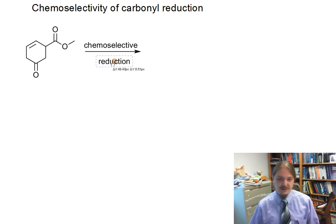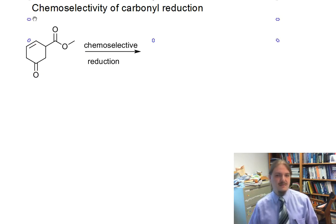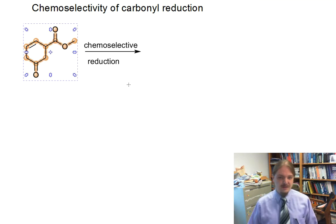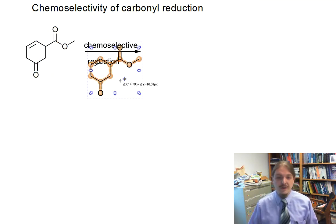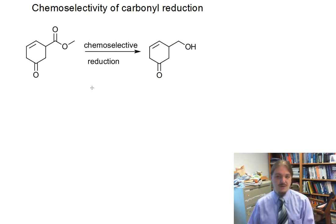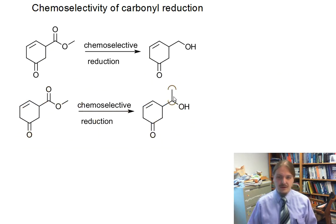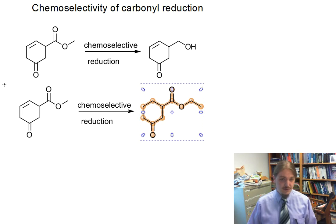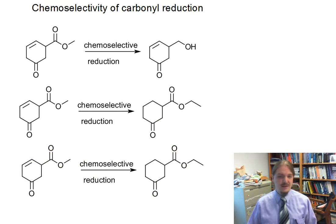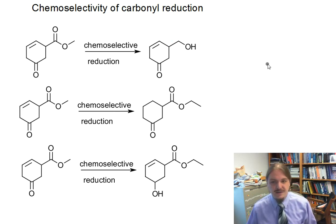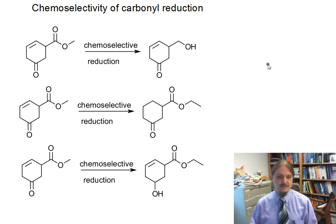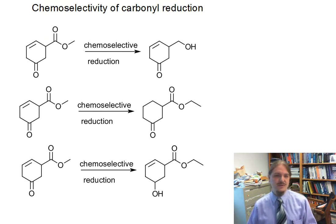There are three different functional groups on here that we could reduce: the alkene, the ketone, and the ester. An ideal chemoselective reduction is one in which only one of these functional groups gets reduced — so we reduce the ester and nothing else, or we reduce the alkene and nothing else, or we reduce the ketone and nothing else. Any of these three reactions would be a chemoselective reduction because we're only reducing one of the possible functional groups that could react.